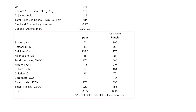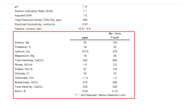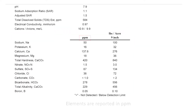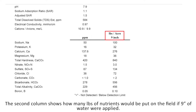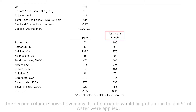Then we go through the different elements analyzed in the irrigation water quality test. We give those results in parts per million, and then there is a second column where we play theoretical farmer and say, Tom is going to use 9 inches of irrigation water this year — so if he did that, how many pounds of nutrients would he actually be putting out there on his field?